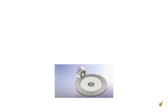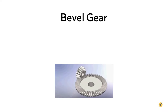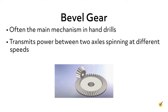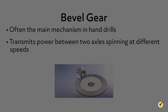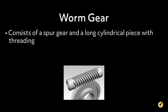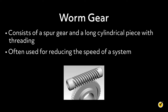The third type of gear is called a bevel gear. Bevel gears are generally used as the main mechanism in hand drills, transmitting power between two axles spinning at different speeds. The fourth type of gear is the worm gear. Worm gear systems consist of a spur gear and a long cylindrical piece with threading that looks much like a screw without a head. These gears are often used for reducing the speed of a system.